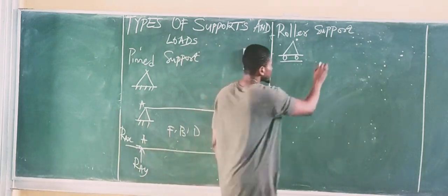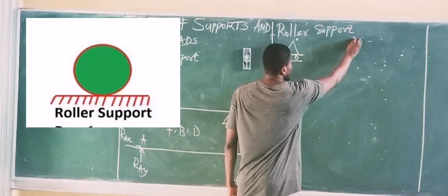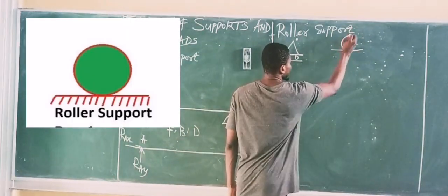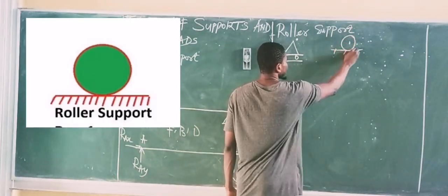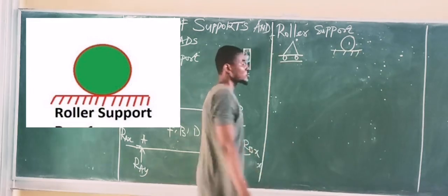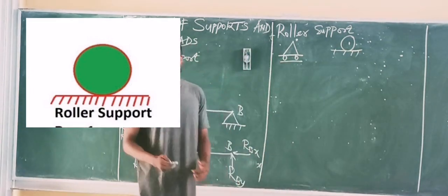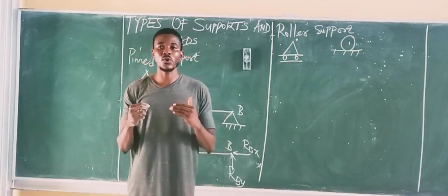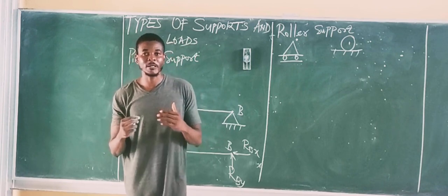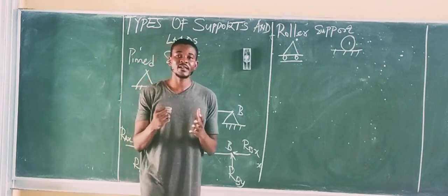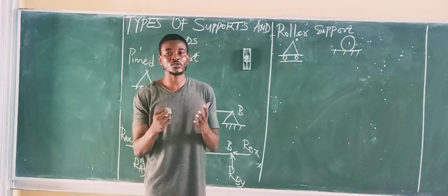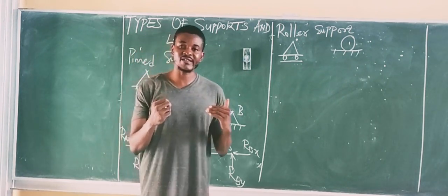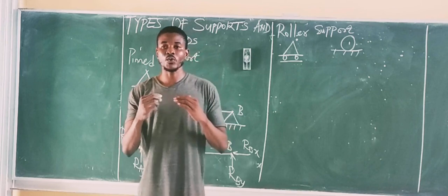The Roller Support can also appear as just a single circle. It is called a Roller Support because it is used to provide assistance alongside a Pinned Support.